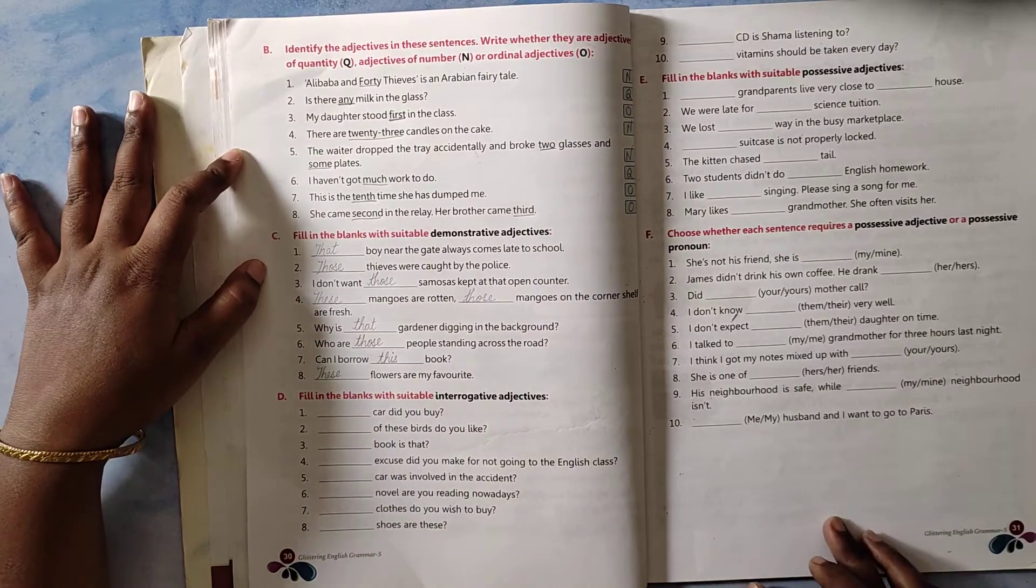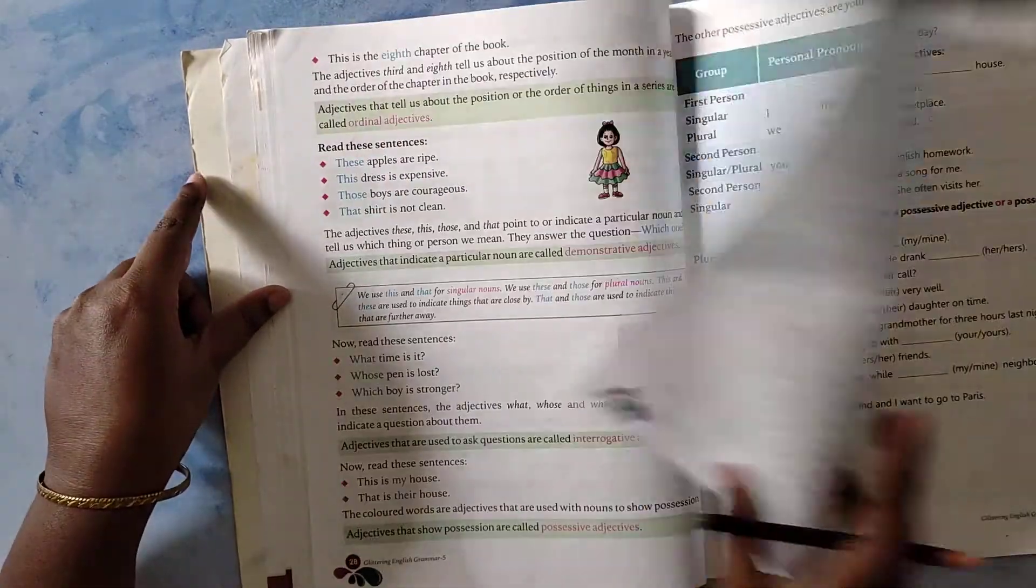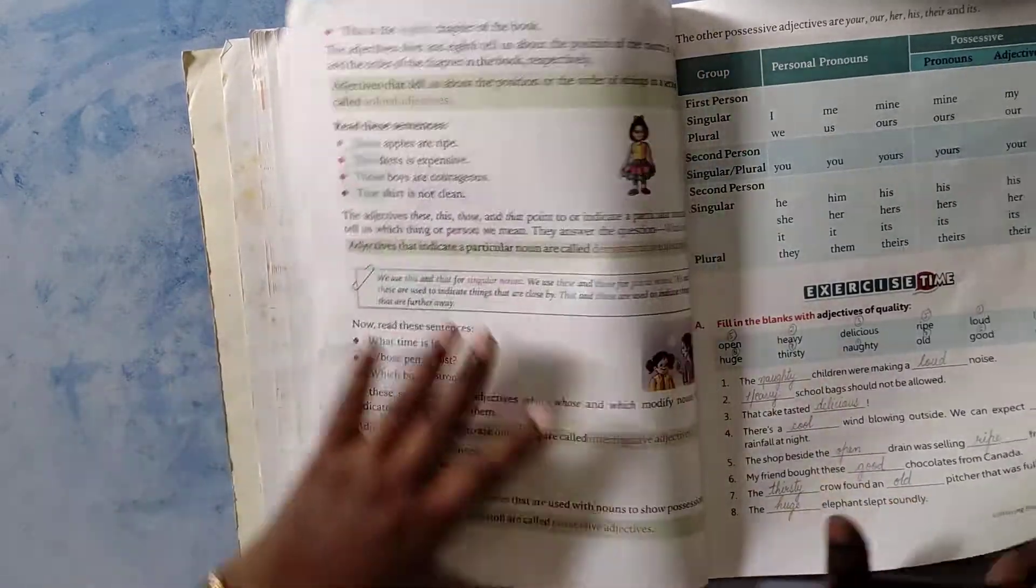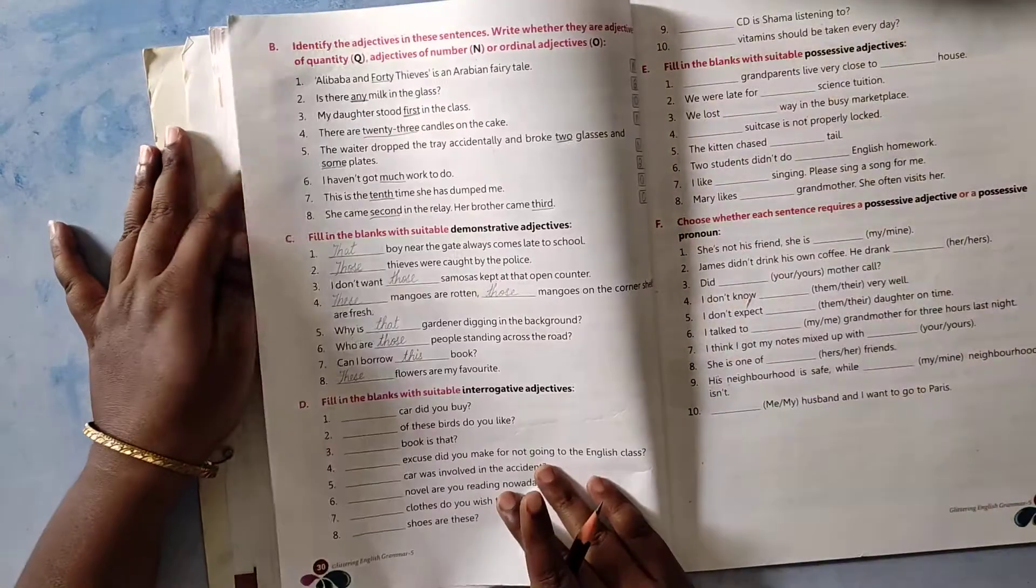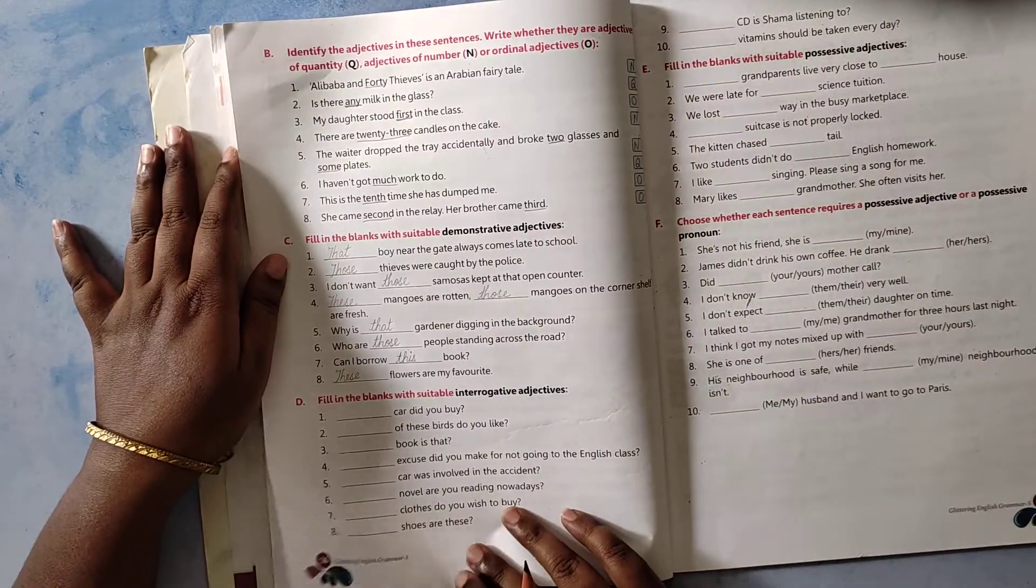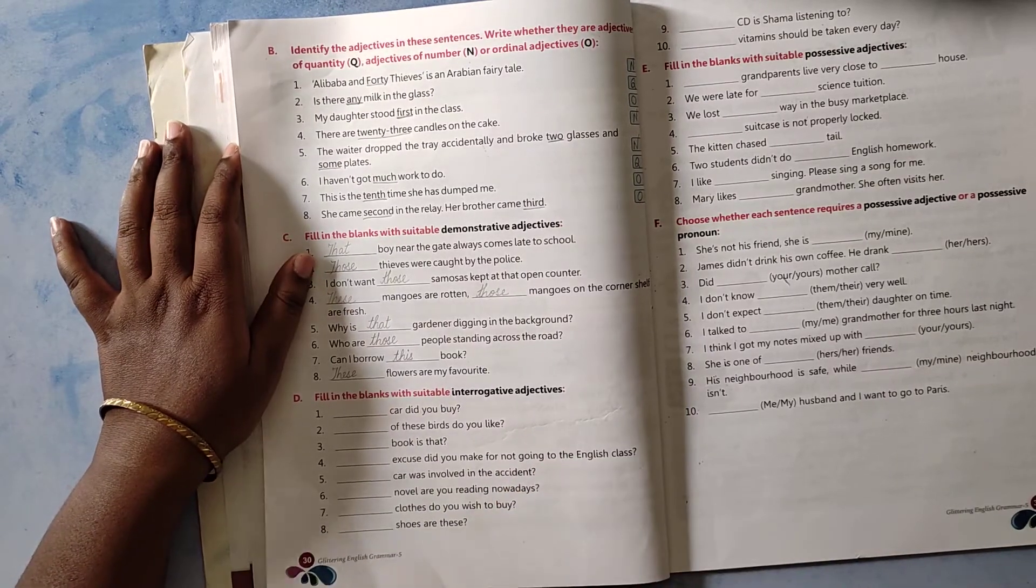Hello students of class 5th, today we are going to do chapter number 6, kinds of adjectives, exercise D in English grammar.